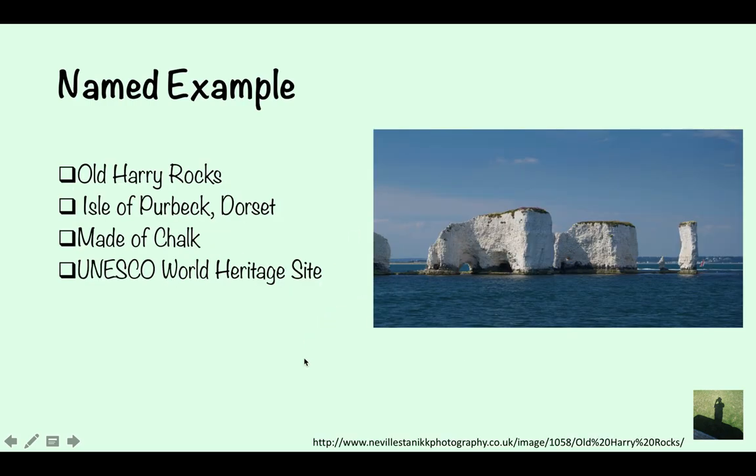So a great named example of this is Old Harry Rocks in the Isle of Purbeck in Dorset. It's made of chalk. It's a UNESCO World Heritage Site. And what's so good about this is that you can see all the different types. So you've got the joints, which you can see all along. You've got a cave here. You've got an arch here. And then you've got a stack here. You've got stump here. So it's a really good example. If you show the examiner you know the named example, it's just going to boost you up and it's going to show the examiner you know what you're talking about. It's going to get you some extra marks.